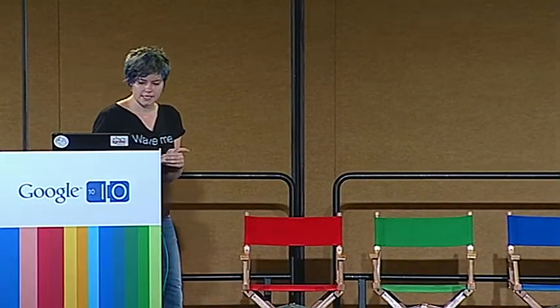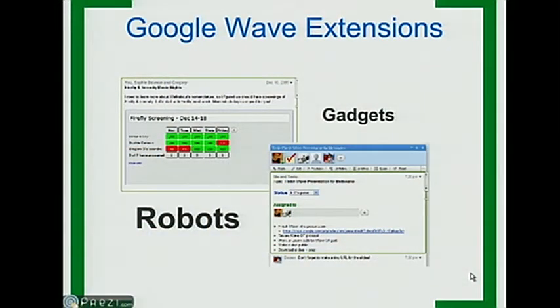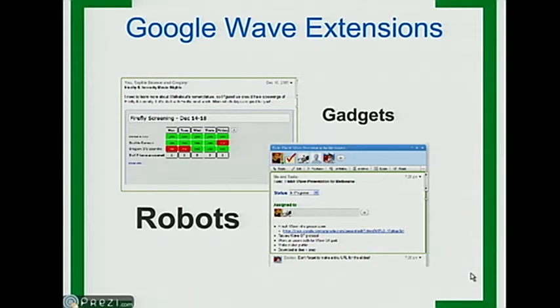Google Wave extensions are ways of extending this generic communication tool into something customized for a particular use case. For example, Wave may be good for task tracking out of the box, but when you add a task tracking robot that auto-tags, auto-assigns, and creates saved searches, it becomes a killer app. As a developer, you should be thinking about what your extension is helping people do and making sure it's highly usable.